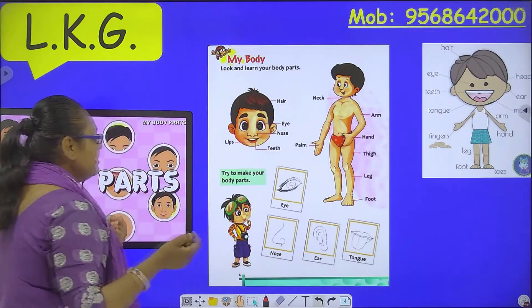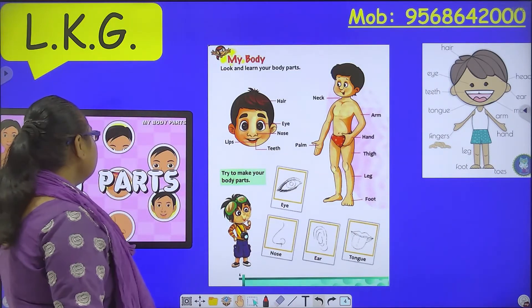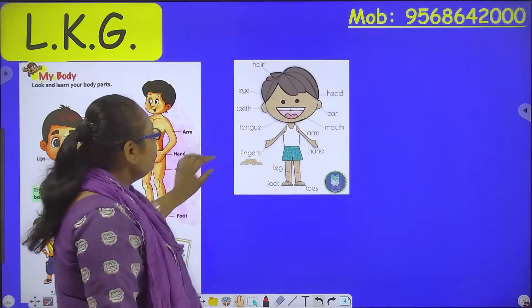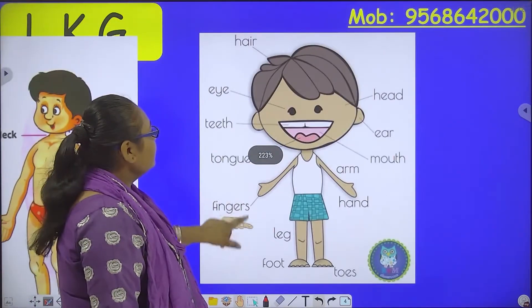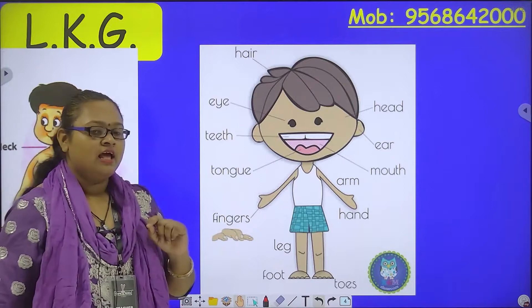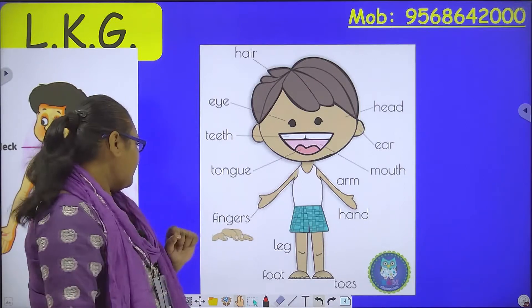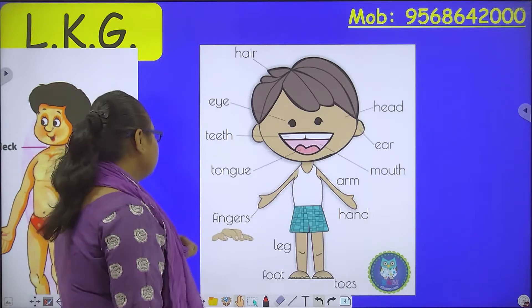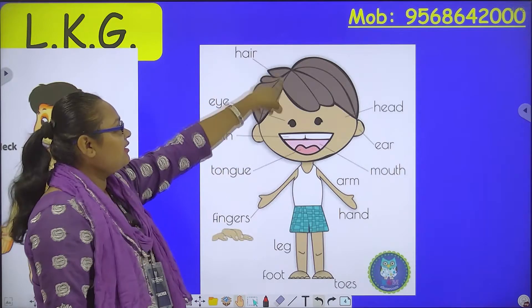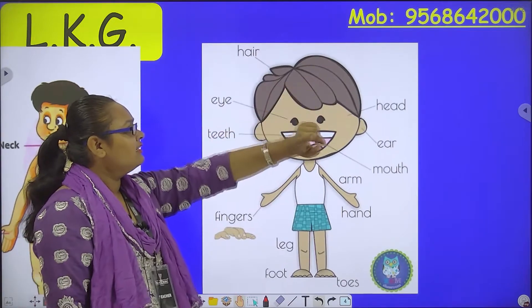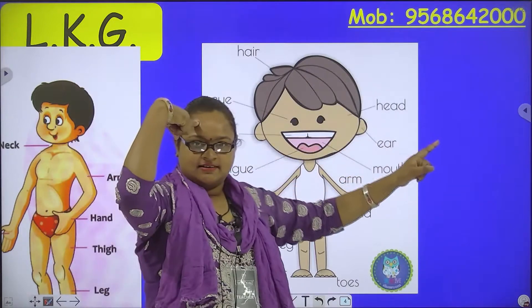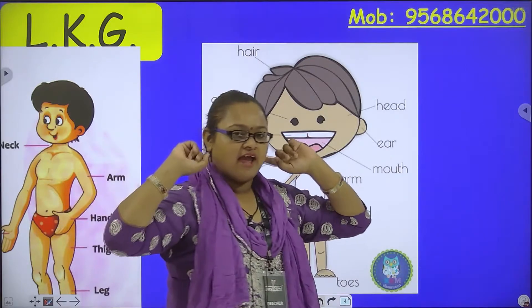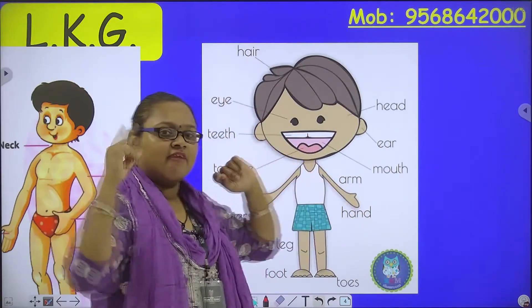Today we will learn my body parts. See the picture — what a beautiful picture! So, what are we going to learn here? Body parts. See this. This is head. We have one head. Ear — we have two ears.